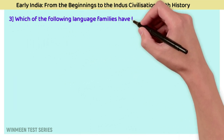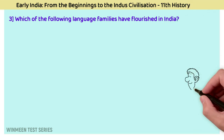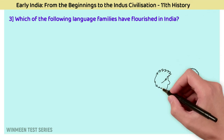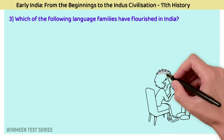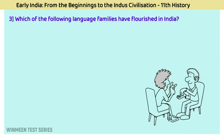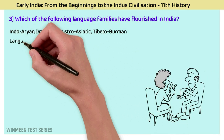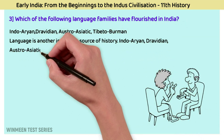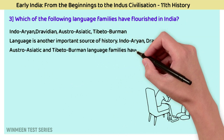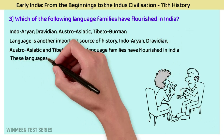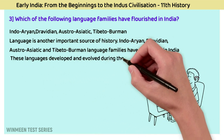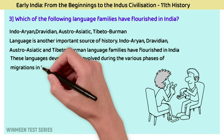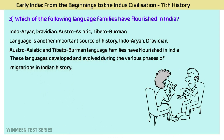Question 3: Which language families have flourished in India? The answer is Indo-Aryan, Dravidian, Austro-Asiatic, and Tibeto-Burman. Language is another important source of history. These language families have flourished in India and developed during the various phases of migrations in Indian history.